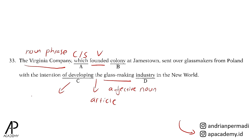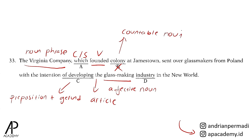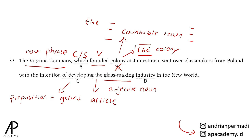Developing dalam pilihan C sudah benar karena salah satu pola yang muncul setelah preposition adalah gerund, dan developing adalah gerund. Oleh karena itu jawabannya adalah B: colony. Sebagai countable noun, colony di sini tidak diketahui jumlahnya. Apabila kita menemukan countable noun yang digarisbawahi maka kita perlu menentukan jumlahnya. Colony ini seharusnya diubah menjadi the colony karena merepresentasikan colony yang spesifik yang berada di Jamestown di masa lampau. Penggunaan artikel the merujuk pada suatu hal yang spesifik. Oleh karena itu jawabannya adalah B.